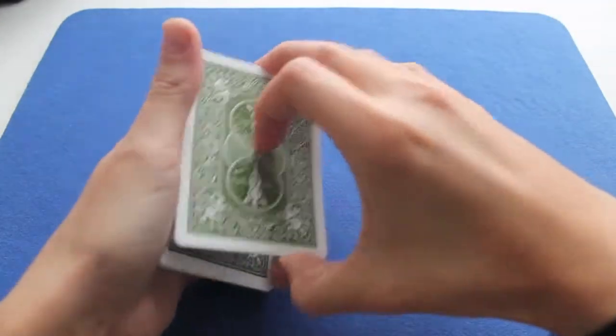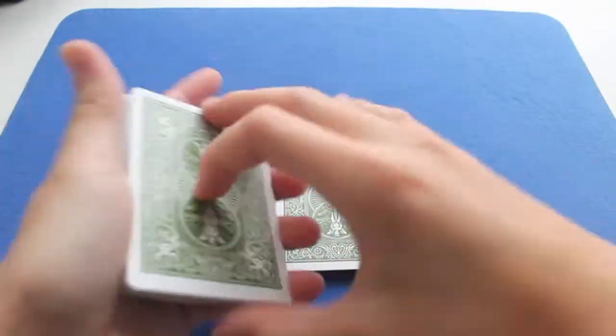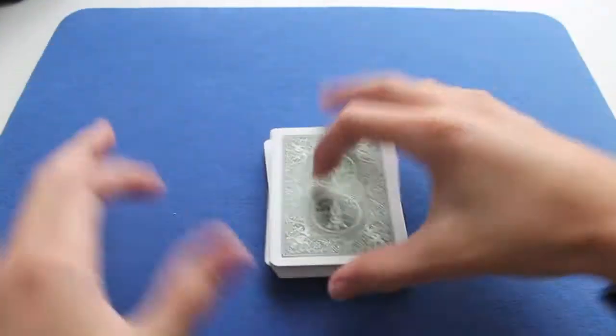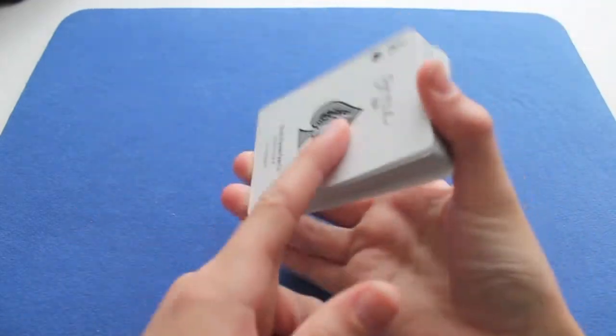Then I cut at the pinky break, put it there, and do a few other cuts like this. So I have the Ace of Spades at the bottom.